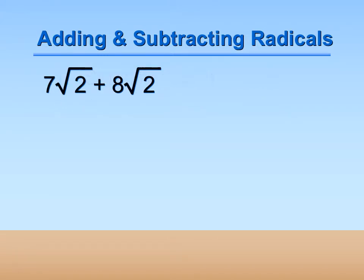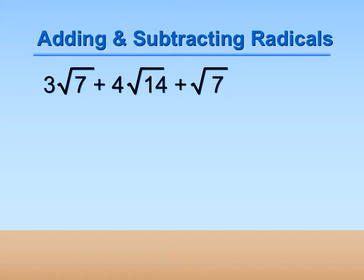For example, 7 square roots of 2 plus 8 square roots of 2 can be combined because they both have the square root of 2 — those are alike. But if you have 3 square roots of 7, plus 4 square roots of 14, plus 1 square root of 7, you can combine the square roots of 7, but you can't combine them with the 4 square roots of 14. That doesn't combine.